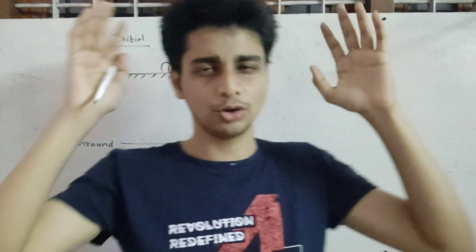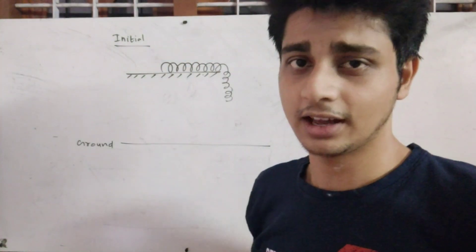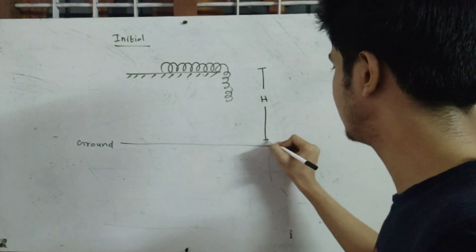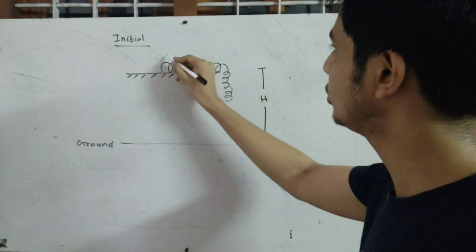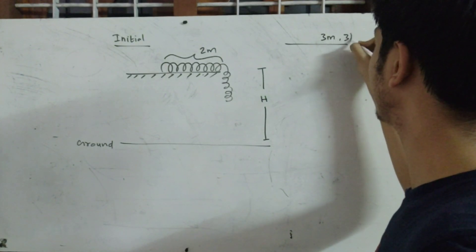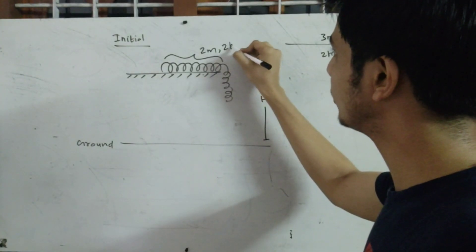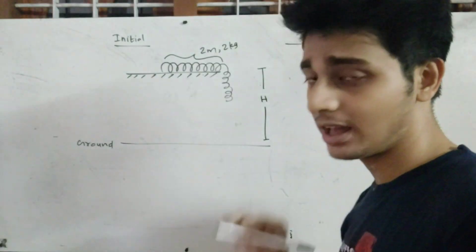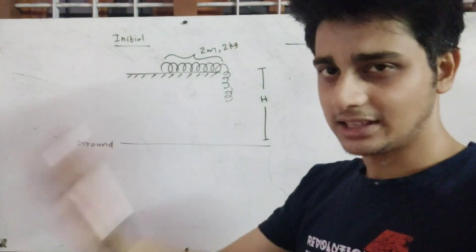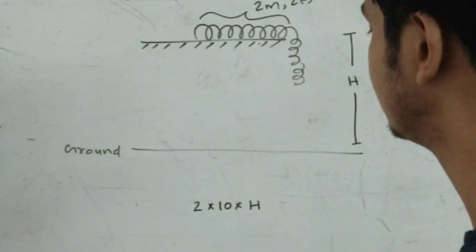Work-energy: total initial energy equals total final energy. I need total initial energy. The chain is at rest, no movement. So energy means potential energy. I want this height X. When I take the 2-meter length hanging, the mass per meter is 3/3 = 1 kg/m. The level is 2. So M = 2, G = 10, H = 10. That's how we calculate the initial potential energy for the hanging part.